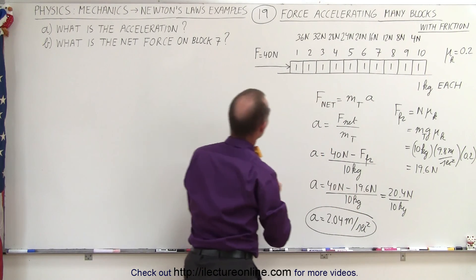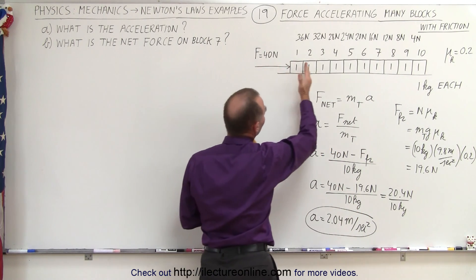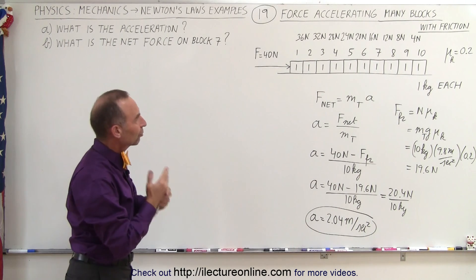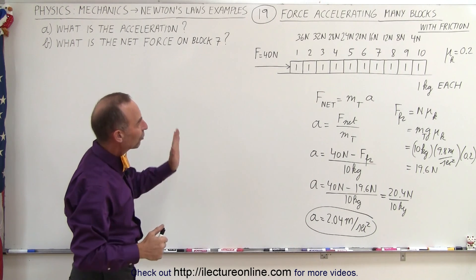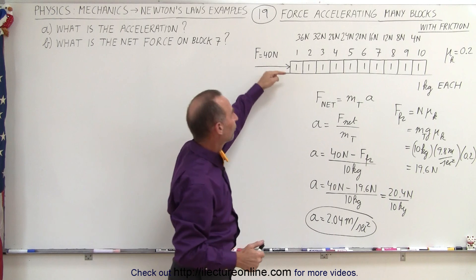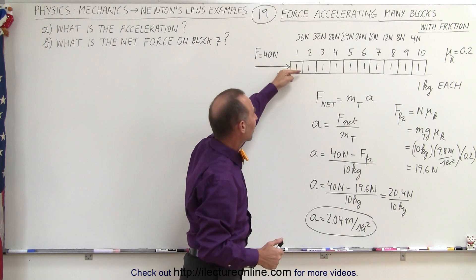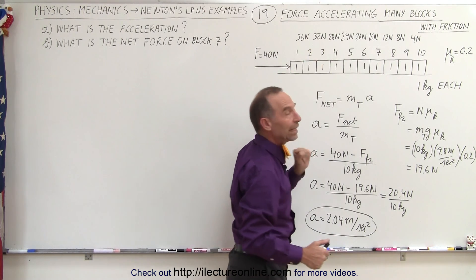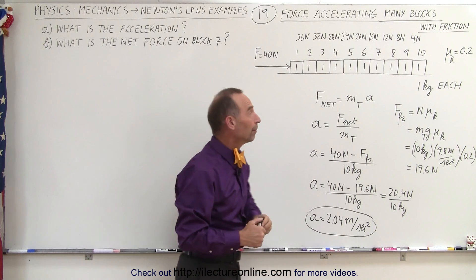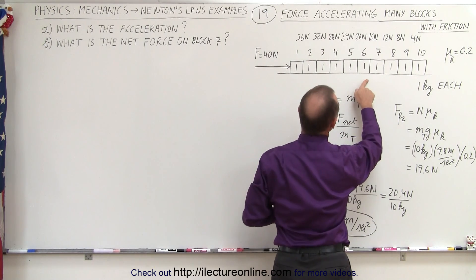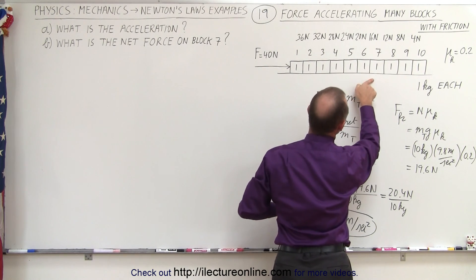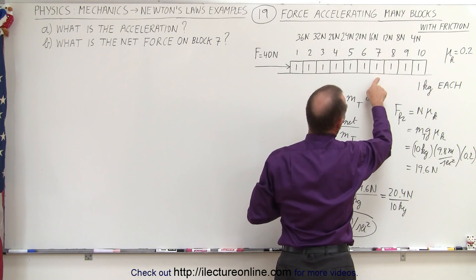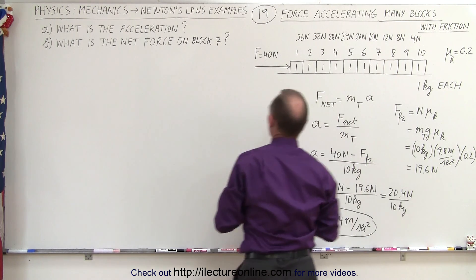This 40 newtons is divided into 10 equal sections of 4 newtons each. As we go through each of the blocks, the force pushing against the last 9 is only 36, the last 8 is 32, the last 7 is 28, and so forth. So we can see that the force pushing against block 7 is 16 newtons, and the force pushing against block 8 is 12 newtons.